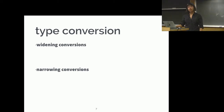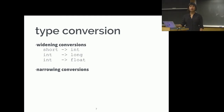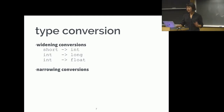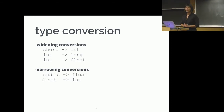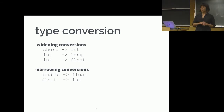We talked a little bit about different kinds of conversions. We have widening conversions, which are things going from short to int, int to long, int to float, and so on — where you're allocating more memory to store that piece of data. There's also narrowing conversions, which you really need to be careful about, where you're reducing the amount of information stored. We can go from a double to a float or a float to an int, for example.